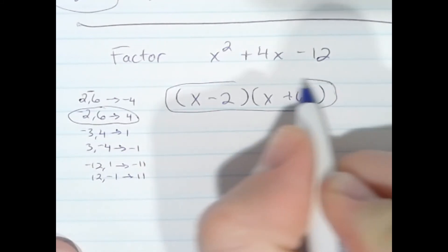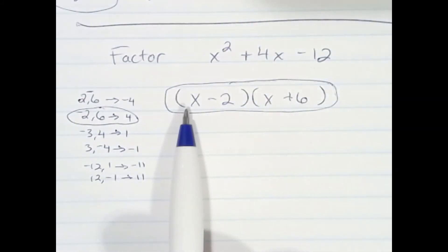And if we wanted to check, you could always go back and FOIL the answer. Multiply x times x and 6, negative 2 times x and 6. Combine like terms, and you will find that it ends up to the original.